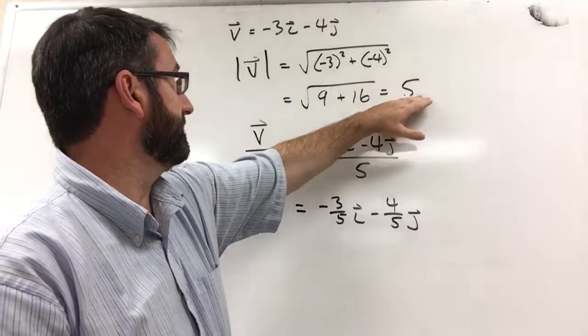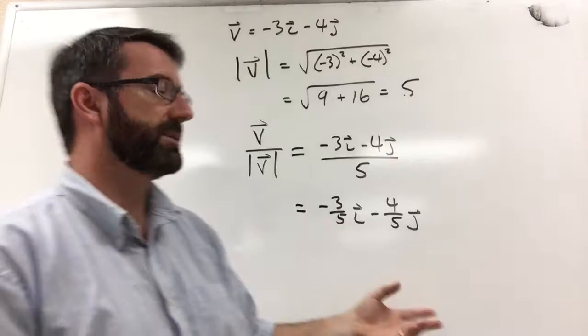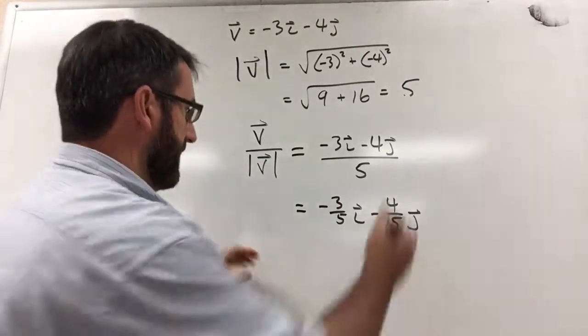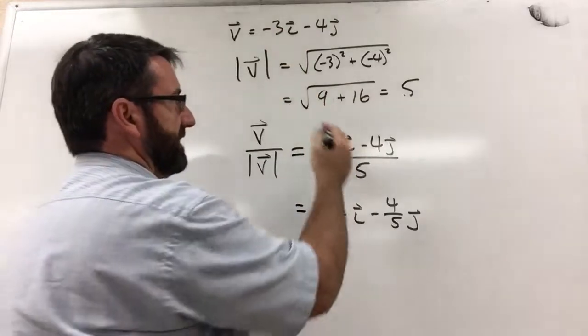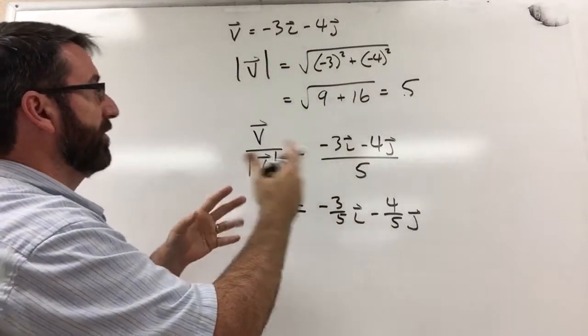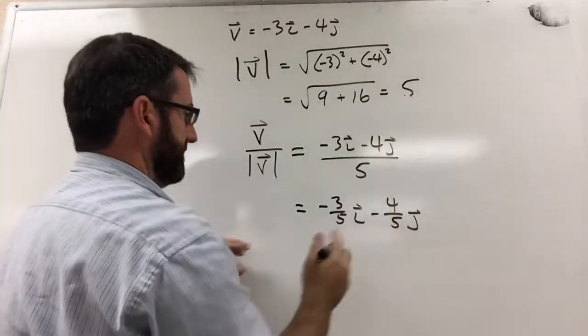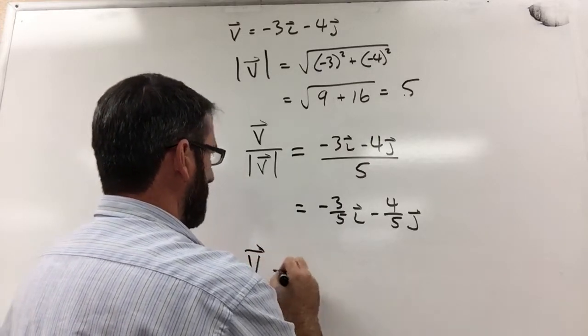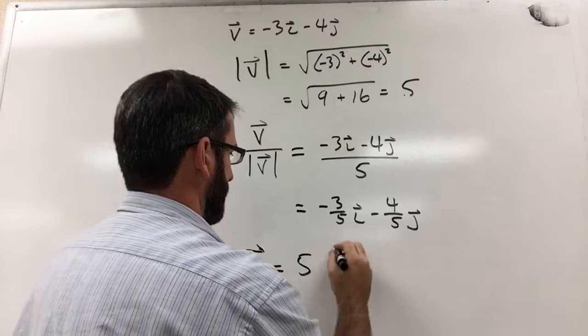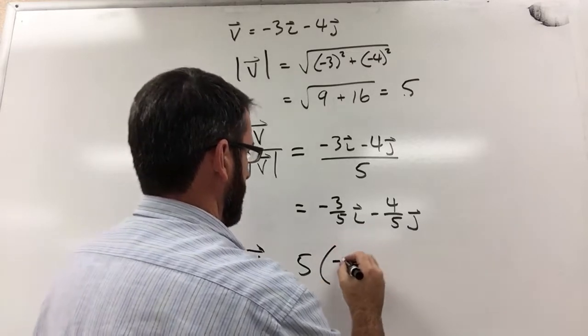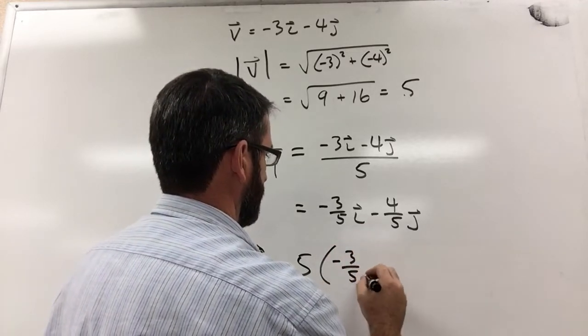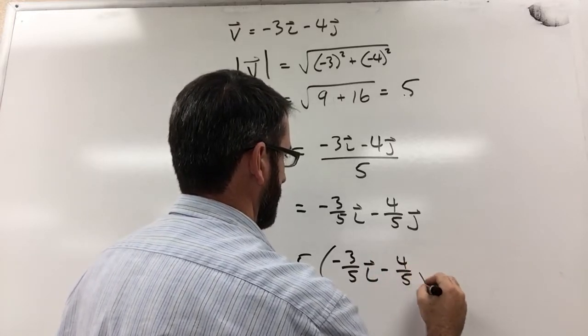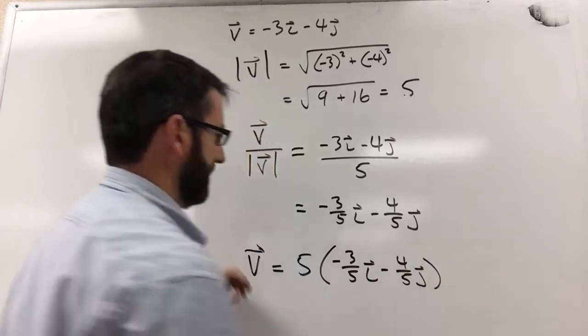So this is its magnitude, or its length, and this is its direction. If we multiplied that together, we'd have the whole vector. So this vector expressed as a product of its magnitude and direction is going to be 5 times negative 3 fifths i minus 4 fifths j.